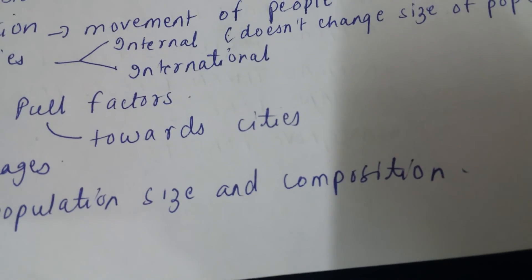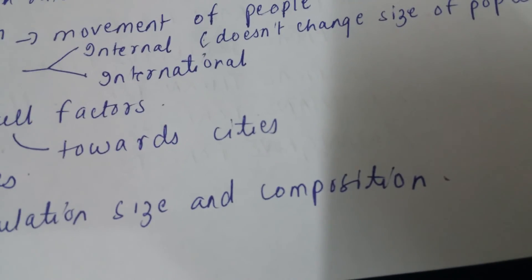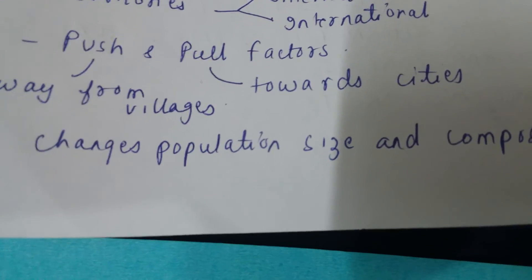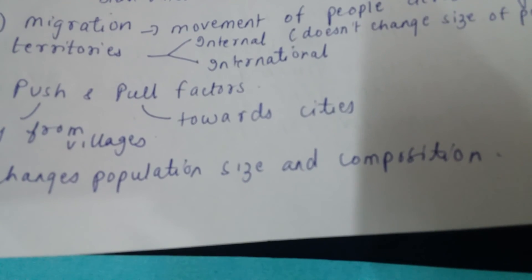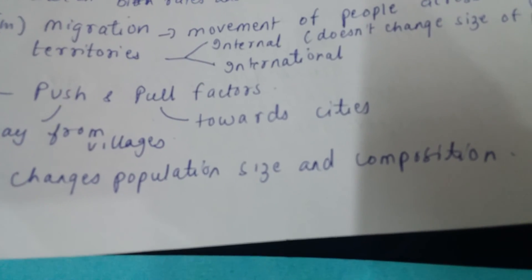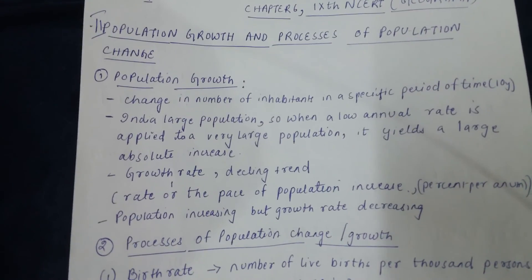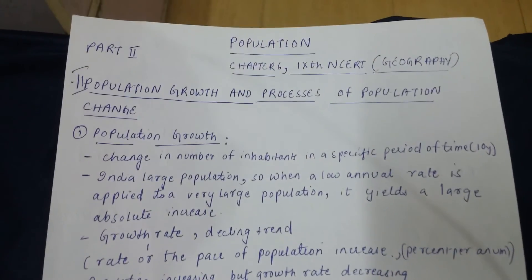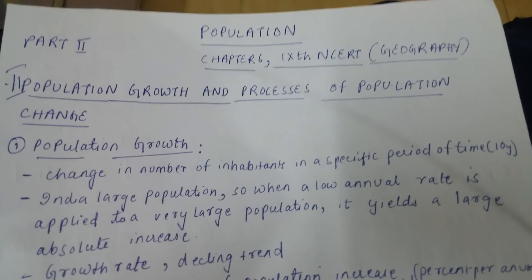Composition means that even if size remains 9, all 9 could be working population, or if size grows to 20, all 20 could be dependent population. Even if the size increases, if the composition is good it is not a problem. But if size increases and the composition is not conducive for economic growth and a good lifestyle, it is not a welcome change. To quickly revise: we covered population growth, rate of population growth, birth rate, death rate, and migration — summing up population growth and processes of population change.